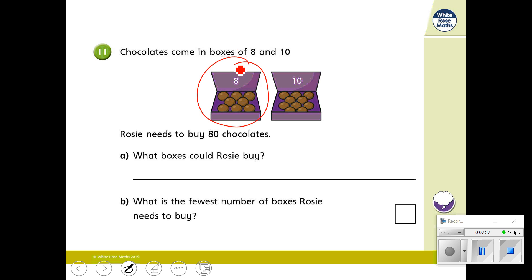OK, let's pretend she just buys boxes of 8. And we know she wants 80. So what times 8 will give me 80, the answer is 10. So she can have 10 of these boxes.